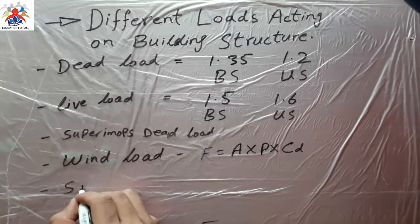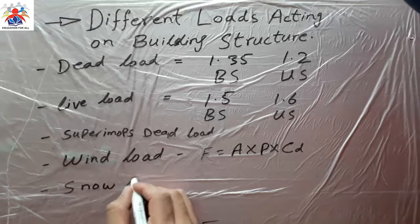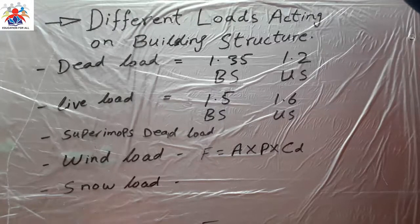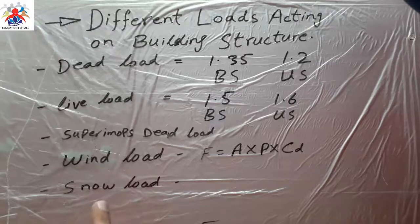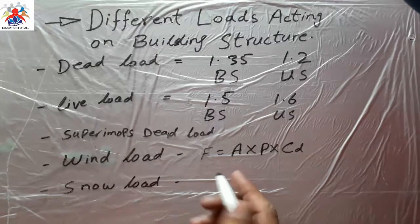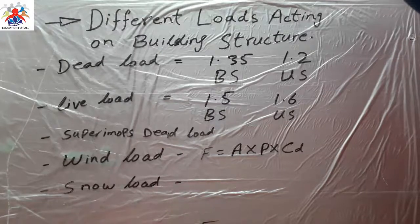The next load we have is snow load. Snow load is a load which comes from the snow. As the name suggests, it comes from snow resting on top of the building, such as on the rooftop. This load acts downward on the building.